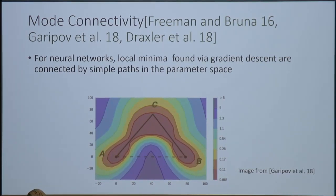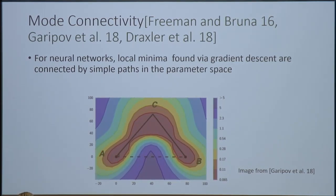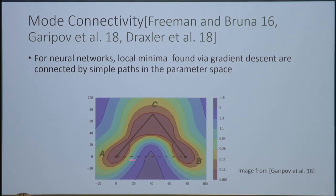This is just the projection of the parameter space into a two-dimensional space. A and B are just two random local minima. The colors represent the value of the loss function — warmer colors mean the loss is low, colder colors mean the loss is high. If you go directly between these two solutions via linear interpolation, there is actually a barrier — the loss in the middle is much higher than at the two endpoints.